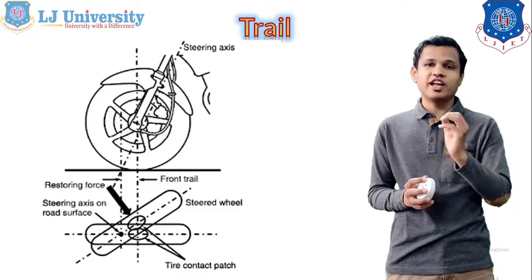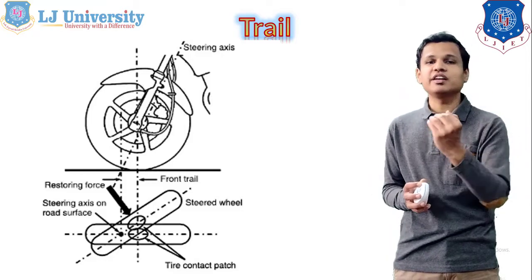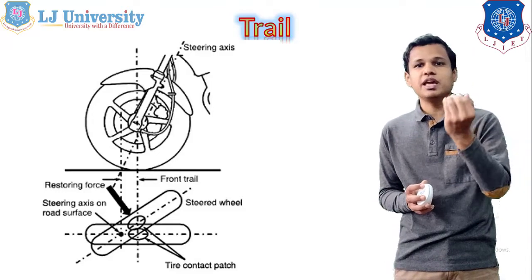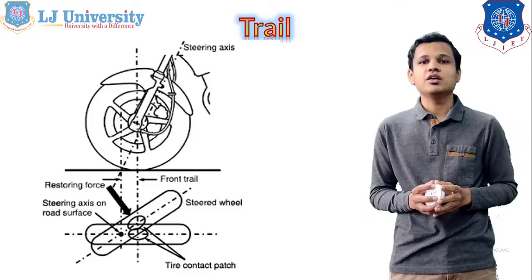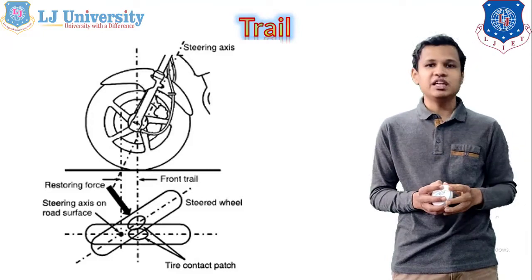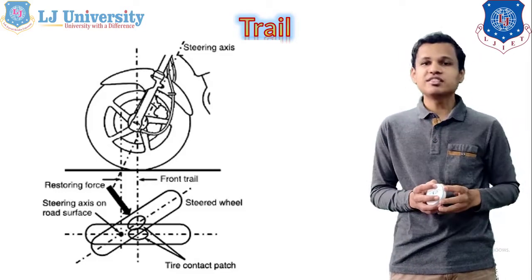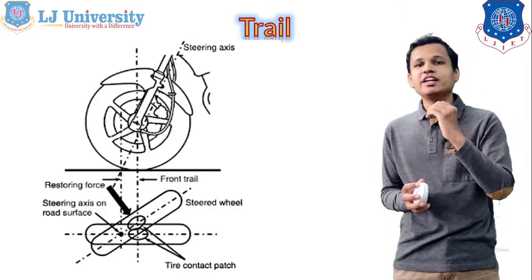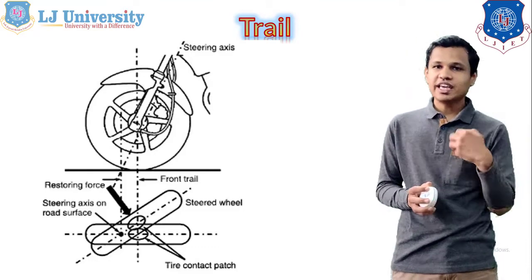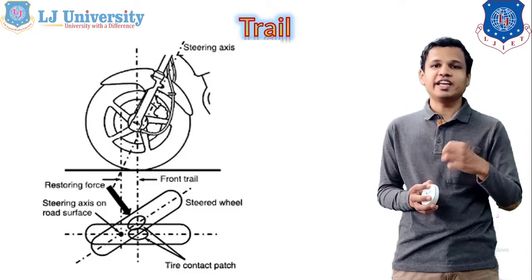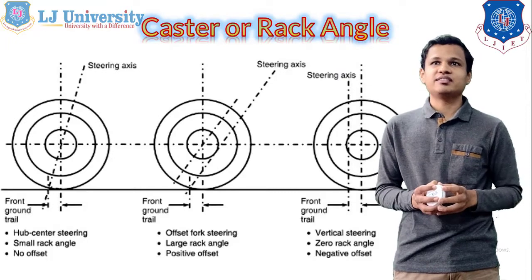Up to a certain point, the restoring force can be overturned by the driver. But after a certain value, the vehicle will not be able to go straight and the restoring force will be overpowered. So the effort of the driver increases if the trail is increased. However, increasing trail gives better cornering ability — the two wheeler can be turned more easily. So in the case of racing motorcycles, the value of the trail will be more compared to normal two wheelers.